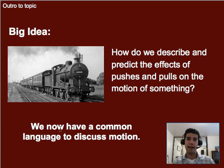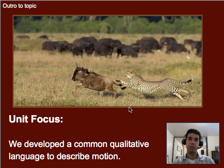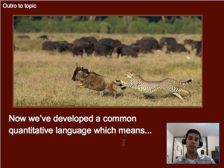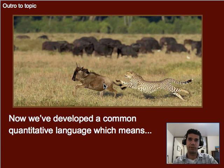Building toward that, we've developed a common language to discuss motion, both qualitatively and quantitatively. That brings us to our unit focus: having a common qualitative language — being able to describe the difference between the cheetah's speed and velocity — as well as a quantitative language, so we can actually calculate the difference between the speed and the velocity of a cheetah chasing a wildebeest or water buffalo.